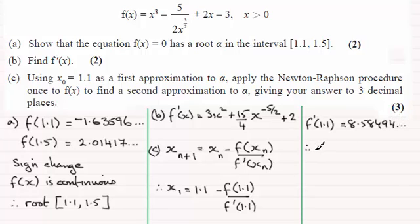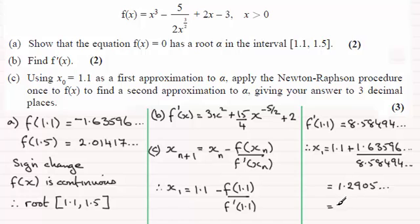So we're in a position now just to say that therefore x1 will be 1.1, then plus, it's going to be plus because f of 1.1, which we've got up here, was a negative value. So it's going to be plus 1.63596, and so on. And that's divided by f dash of 1.1, so that value there, 8.58494, and so on. And if you work that out in your calculator, you should find you get 1.2905, and so on. And we've got to give this to three decimal places. So to three decimal places, it's going to be 1.291 to 3dp for short.